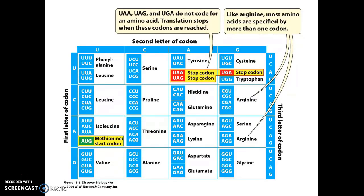What we see here in this chart is the genetic code. We can see the start codon, the stop codons, and a variety of different amino acids. The way this genetic chart works is that the first letter of your codon determines which row you'll find your particular codon, the second letter determines which column, and the third letter determines where in the box you'll find that codon. For example, if you had a codon with the sequence CCG, it would be in the second row, second column, at the bottom of the box. CCG codes for the amino acid proline. There are several other codons which also code for proline, like CCU, CCC, and CCA.